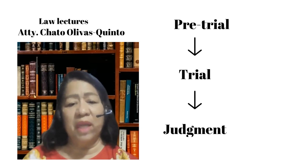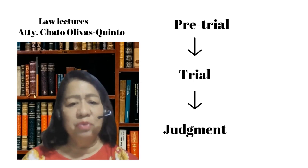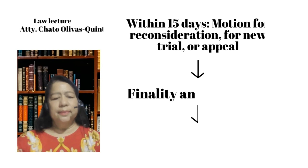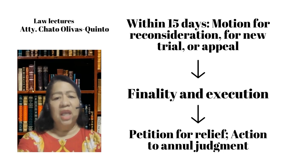Once the pretrial is over, trial will be held in which the plaintiff will be required to present evidence first and then rest his case. Then the defendant will present evidence and rest his case. After both parties have completed their evidence presentation, the court will render a judgment. The party who does not agree with the judgment may file a motion for reconsideration, motion for a new trial, or an appeal within 15 days from notice of the judgment. The judgment will become final and executory after the lapse of 15 days if none of these were filed.